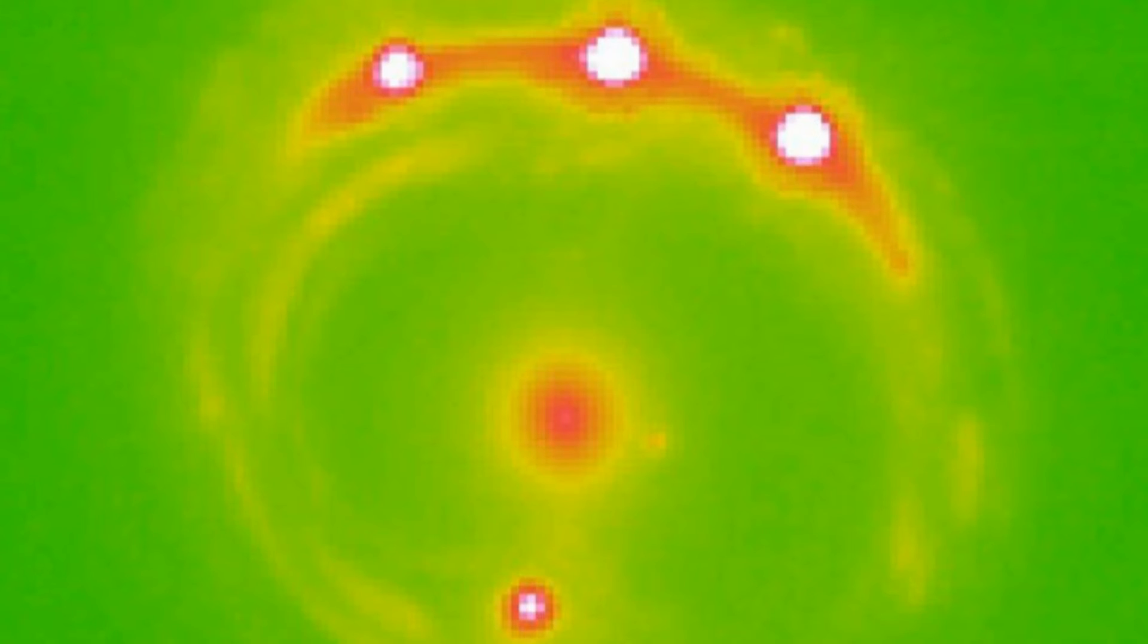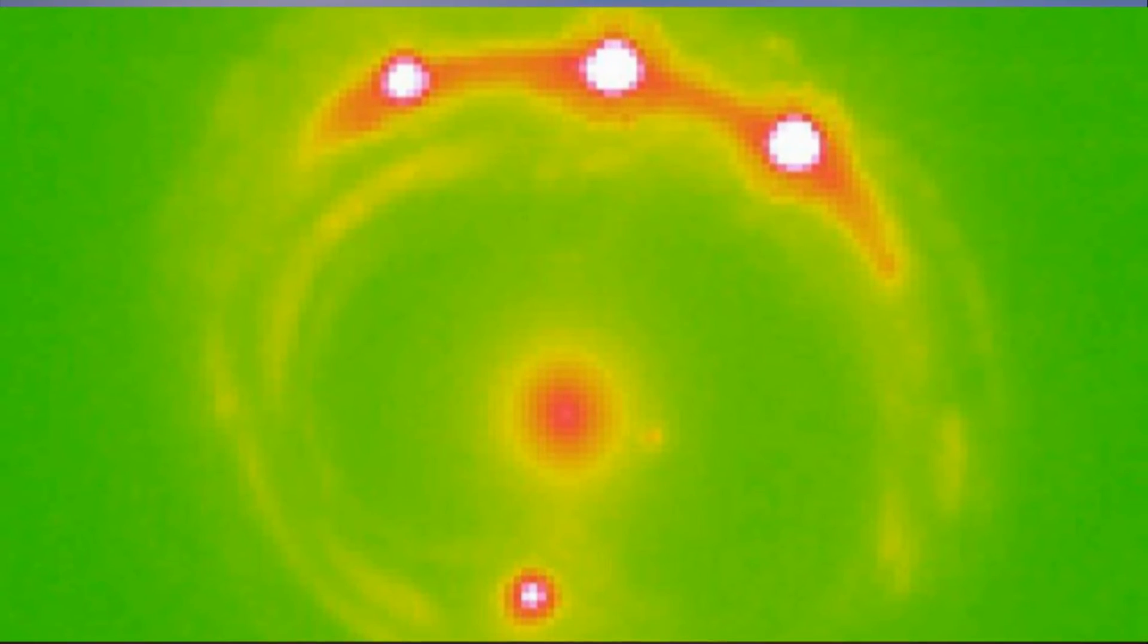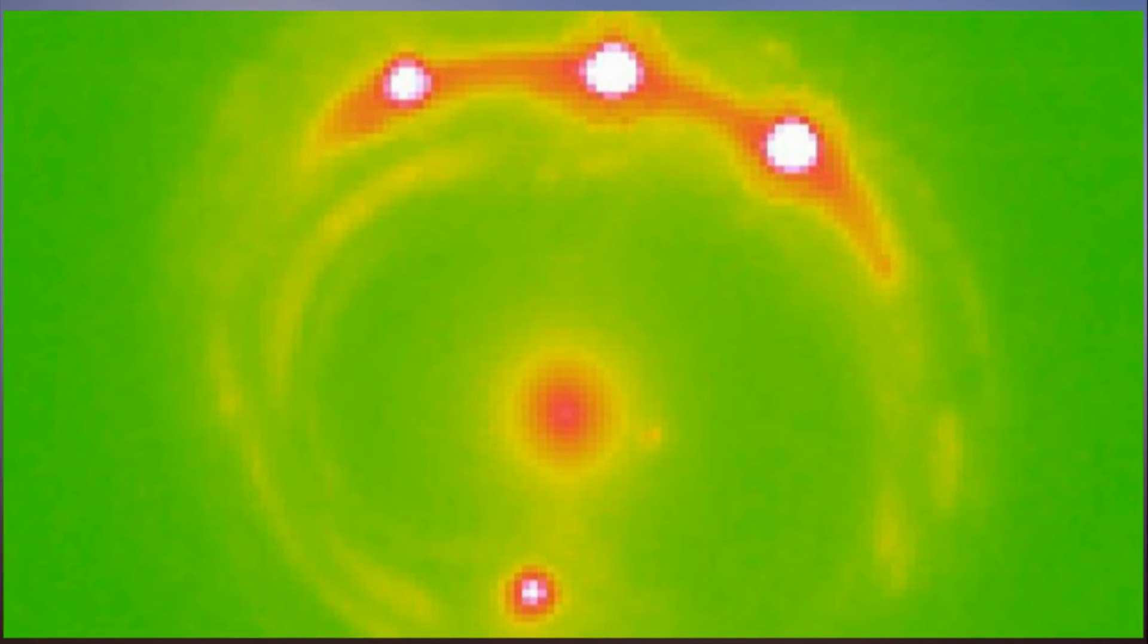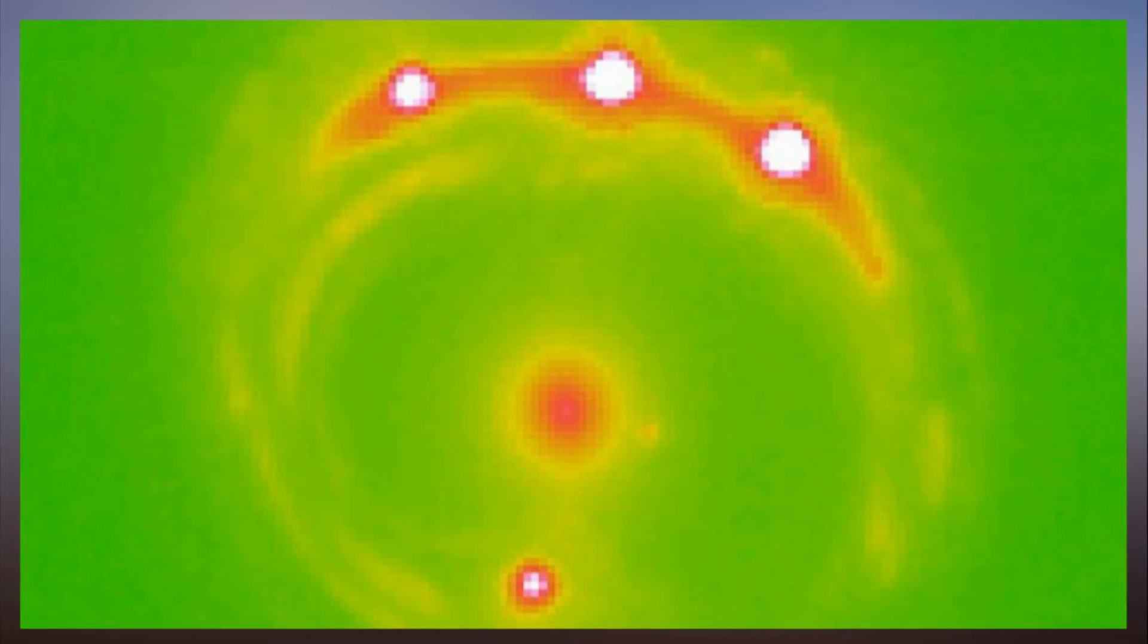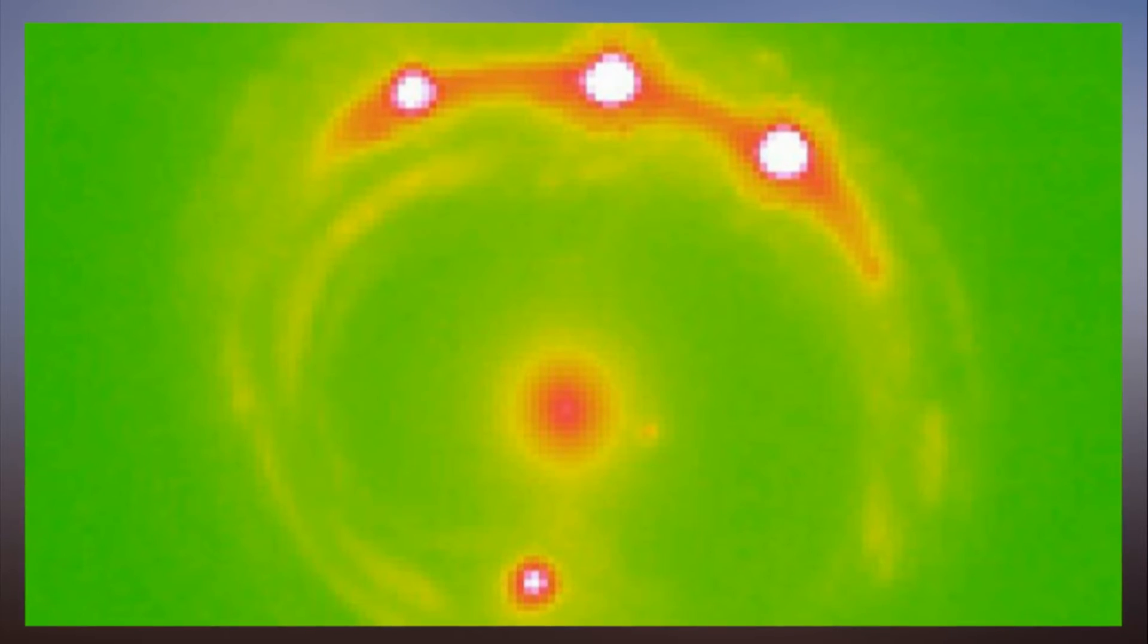We can detect small wobbles in the star as planets move around them, but this only works for larger planets. The transit method monitors stars for small dips in luminance from planets passing in front of them. This can detect smaller planets, but not all solar systems are oriented in such a way that planets pass in front of the star from our perspective.